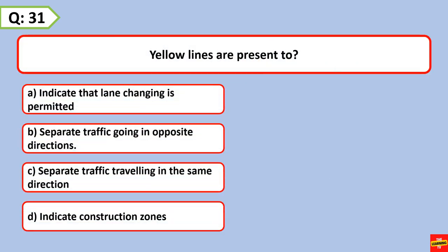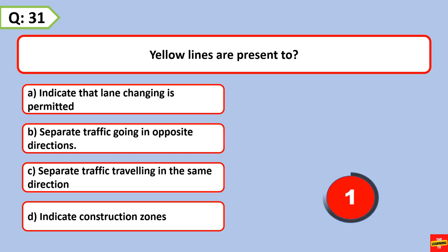Yellow lines are present to separate traffic going in opposite directions.